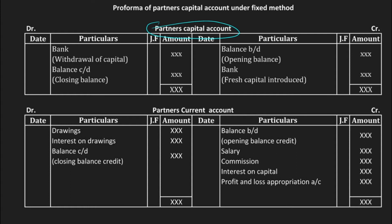Let's start with the entries we need to know. Every format has a credit side and a debit side. In the credit side we enter whatever amount is coming towards the partnership firm, and in the debit side we enter whatever amount is withdrawn. The first entry is balance brought down — if there is any balance carried forward from the last year, that is considered balance brought down.